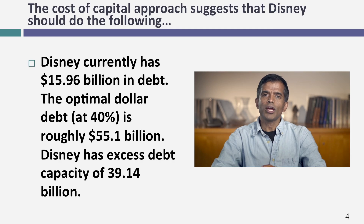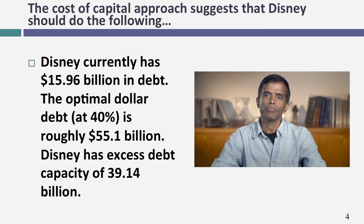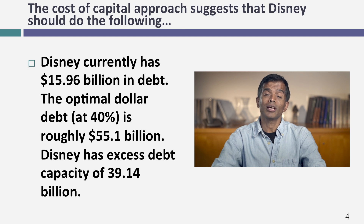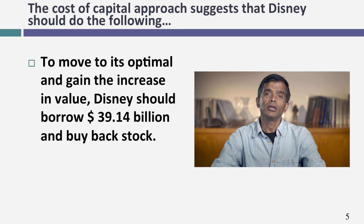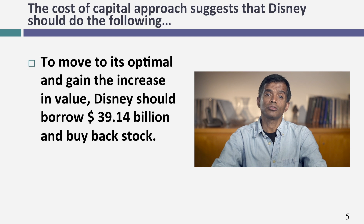If you follow through on the cost of capital approach, here's what we seem to be suggesting Disney can afford to do. Disney is right now at a debt ratio of 11.6% with about $15.96 billion in total debt outstanding. At a 40% debt ratio, it can afford to have about $55.1 billion in debt — effectively meaning they can go out and borrow about $39 billion in new debt. Not only are we recommending that Disney borrow $39.1 billion, we're suggesting they buy back stock with that money.